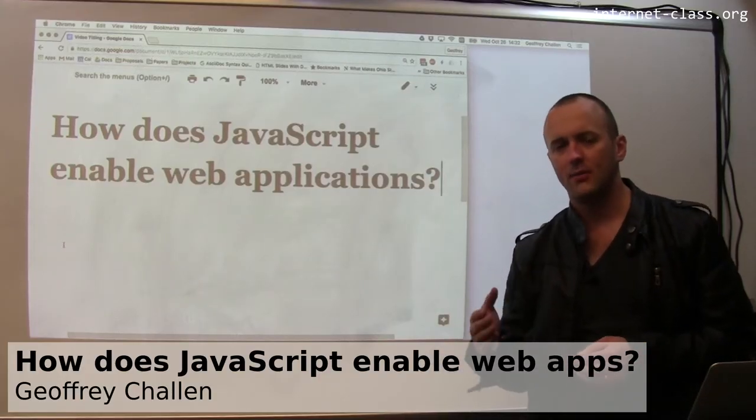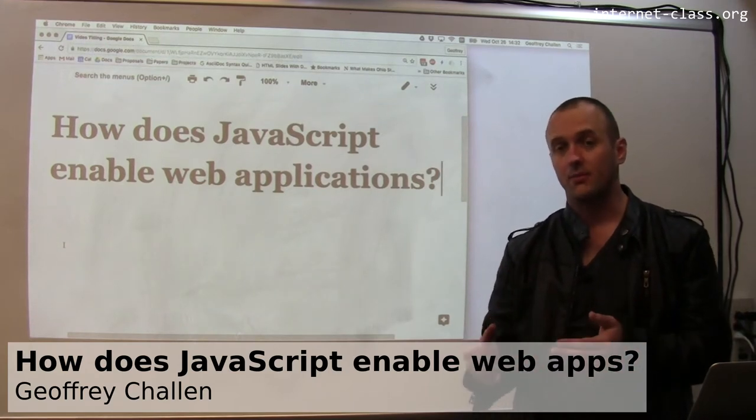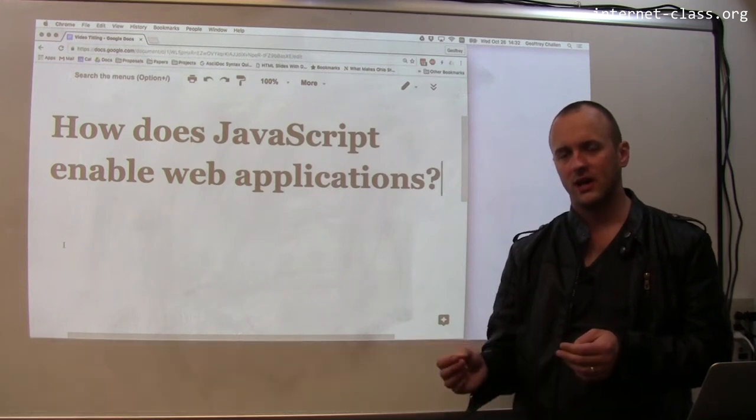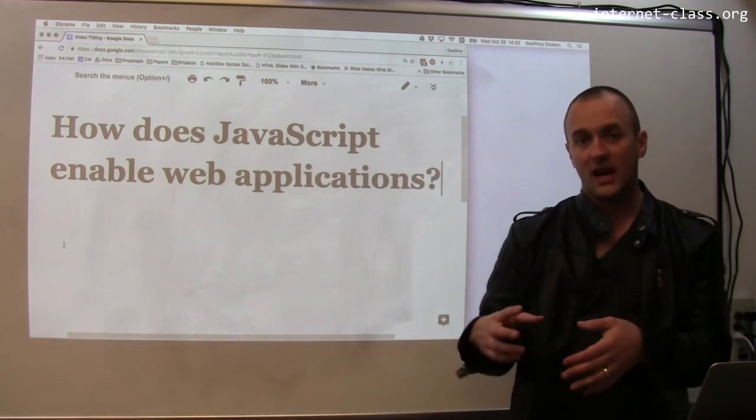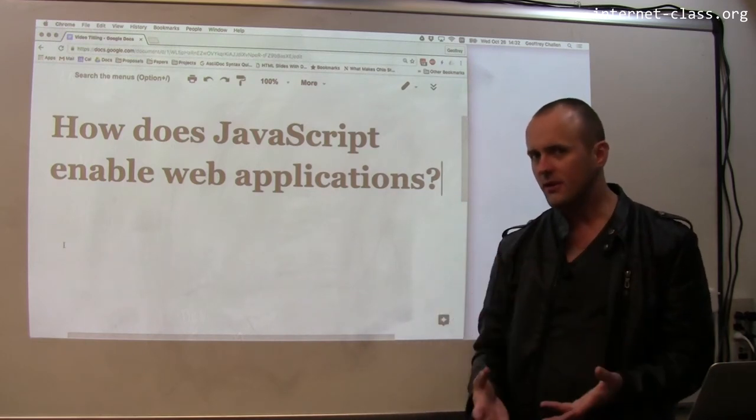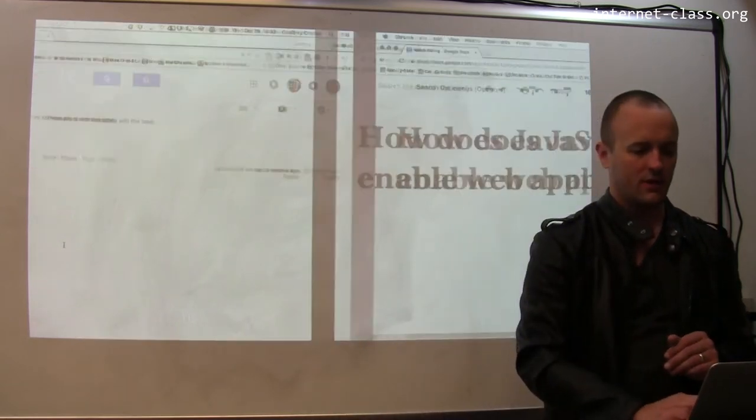Modern web applications are enabled by JavaScript running and JavaScript responding to a couple of things. So I want to walk you through a classic example of how JavaScript is triggered, what JavaScript can do when it starts to run, and then how JavaScript updates the user interface to allow you to understand what's happened. So let me show you an example.